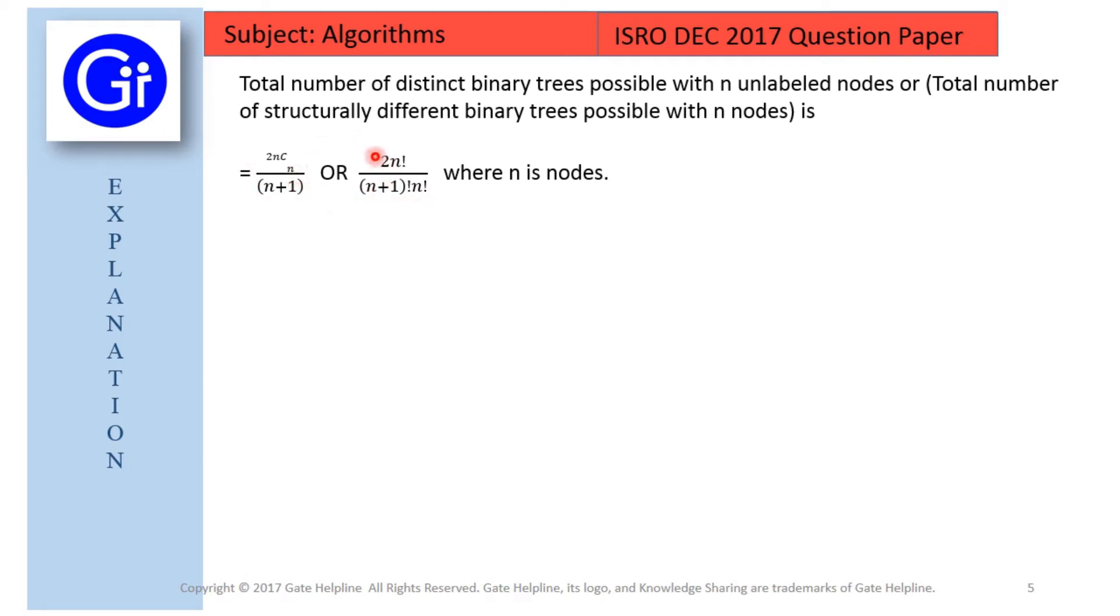With the help of both these formulas, we can get the total number of structurally different binary trees possible with the help of n nodes, and here n denotes the number of nodes in the binary tree.